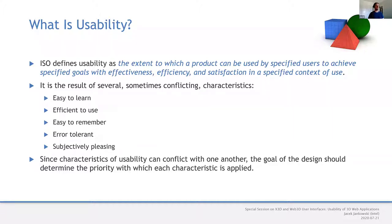These characteristics very often conflict with one another. The goal is to prioritize each characteristic. For example, a 3D website for tourists should be easy to learn, because we often have newcomers. An online game should be subjectively pleasing — the main purpose of the game is to be enjoyable.